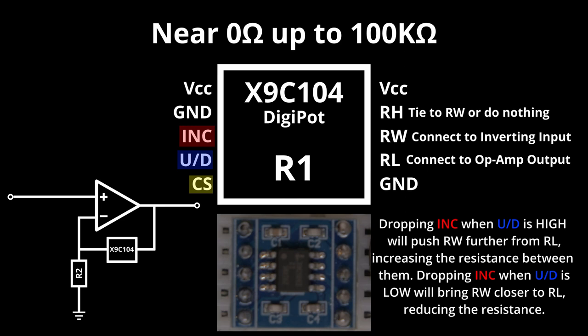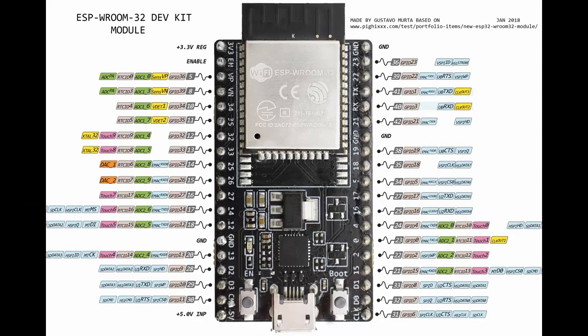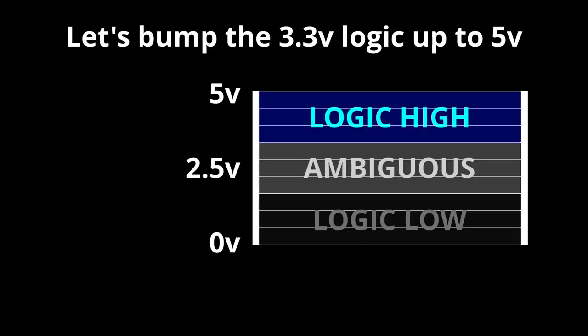This, I believe, will technically work. However, there's one potential issue with this setup. The GPIO pins of the ESP32 will output 3.3 volt logic levels. 3.3 volts is high enough to trigger the signal pins on the X9C104, but I think communicating with it using a 5 volt logic level would be better.